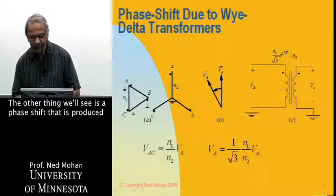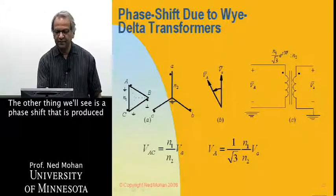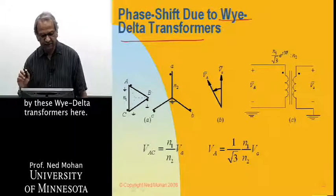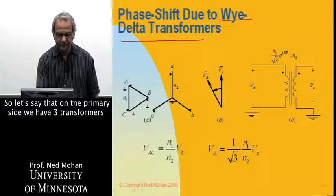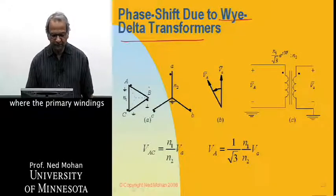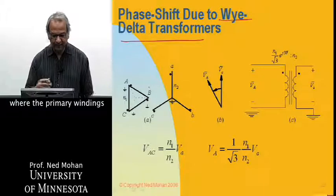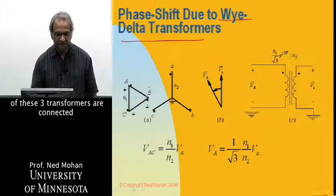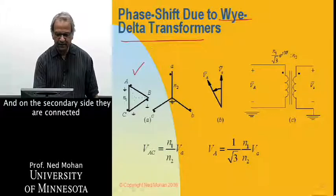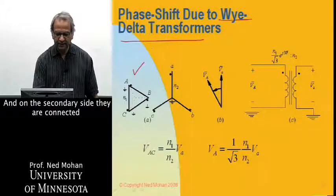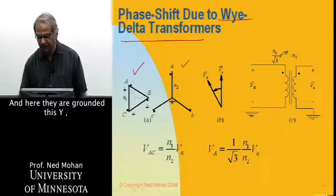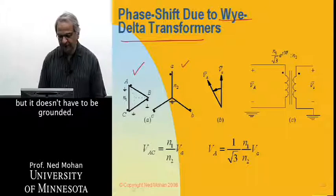The other thing we'll see is phase shift that is produced by these Y-delta transformers here. So let's say that on the primary side, we have three transformers where the primary windings of these three transformers are connected in a delta as shown here, and on the secondary side, they are connected in a Y as shown over here. And here I have grounded this Y, but it doesn't have to be grounded.